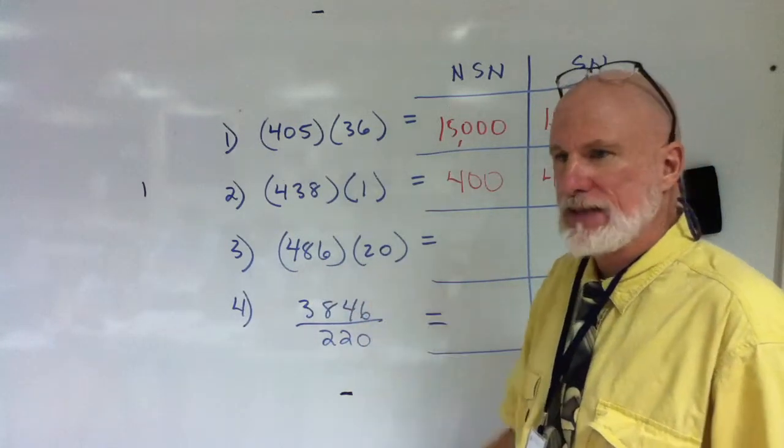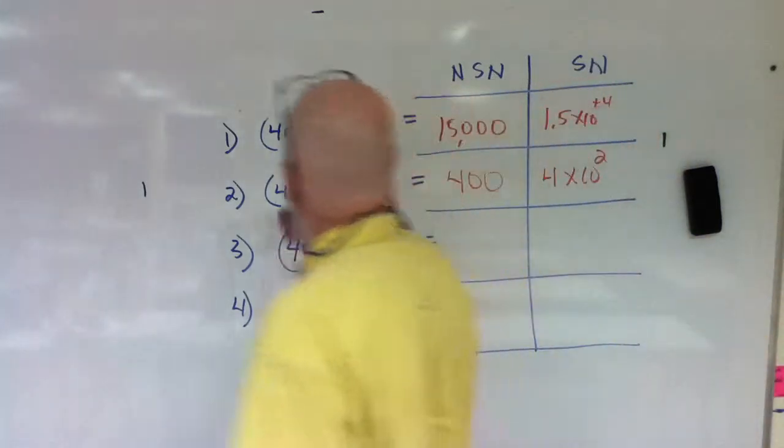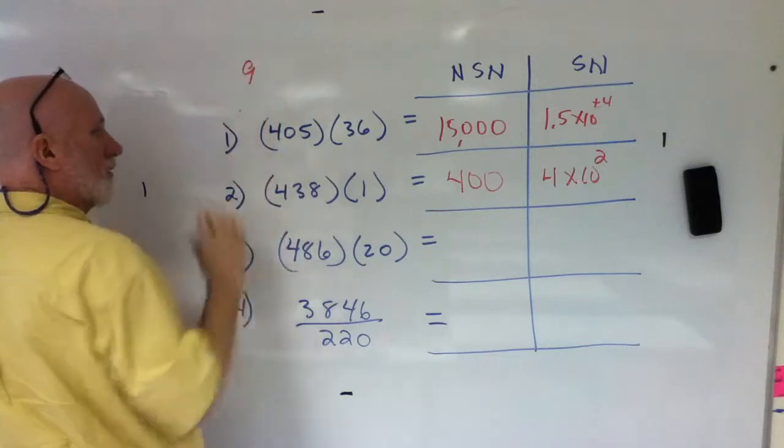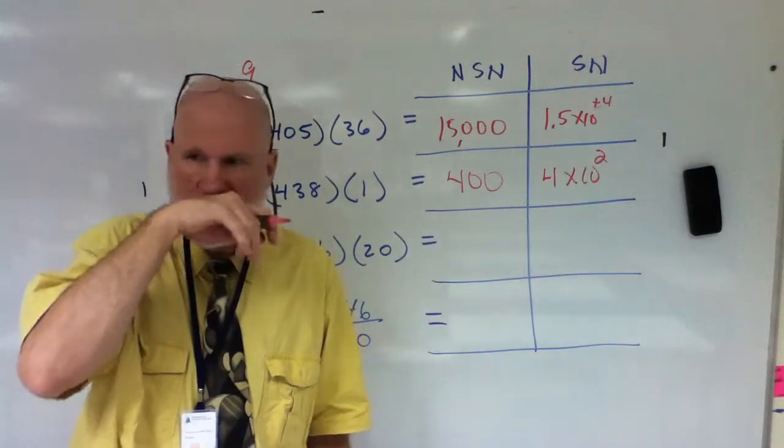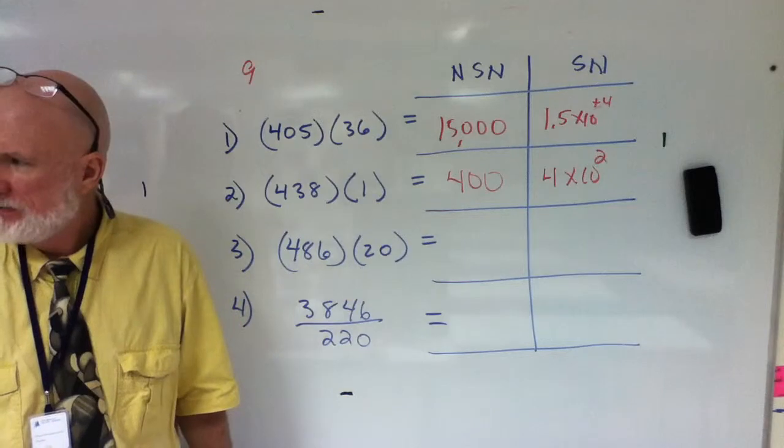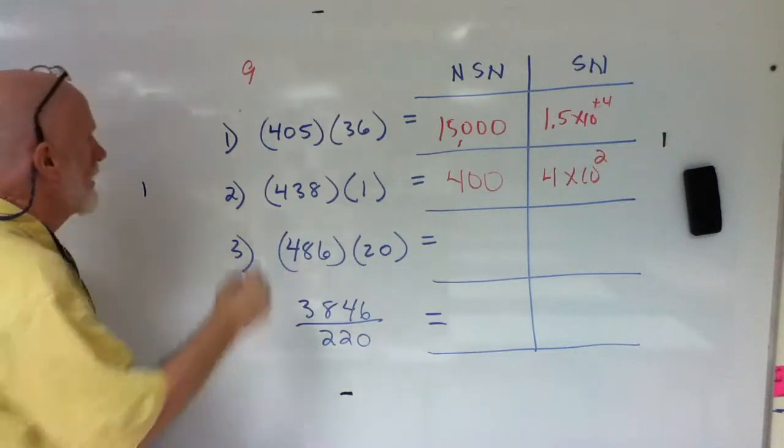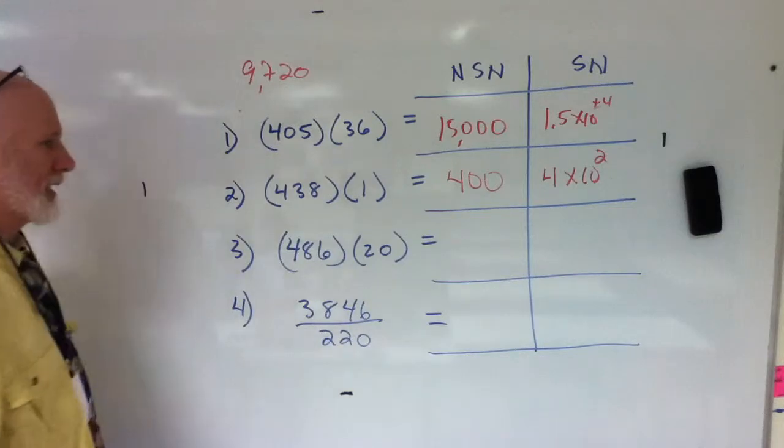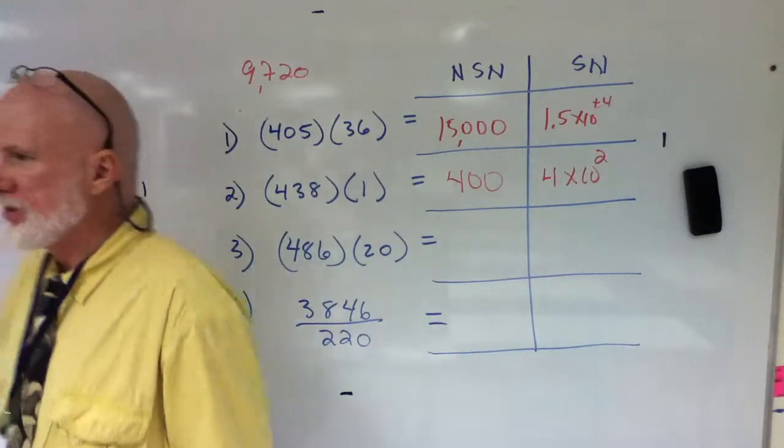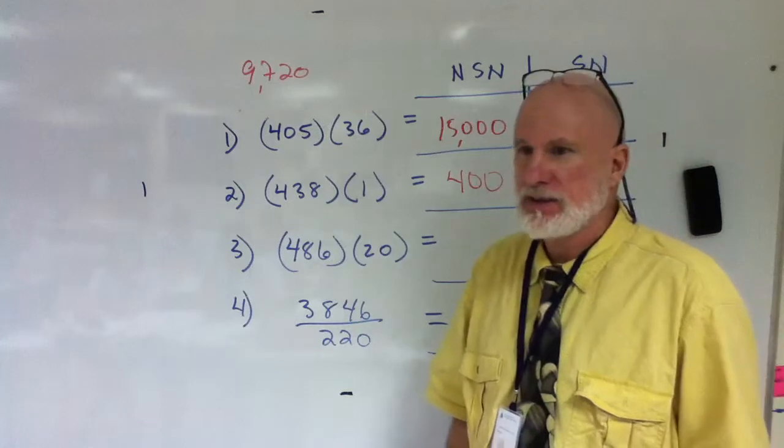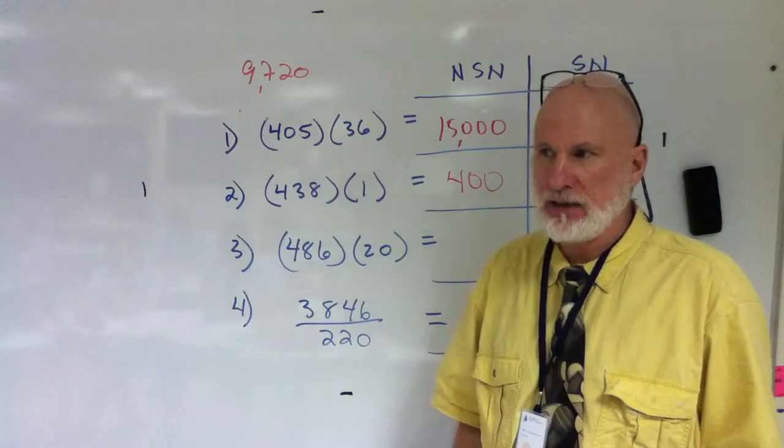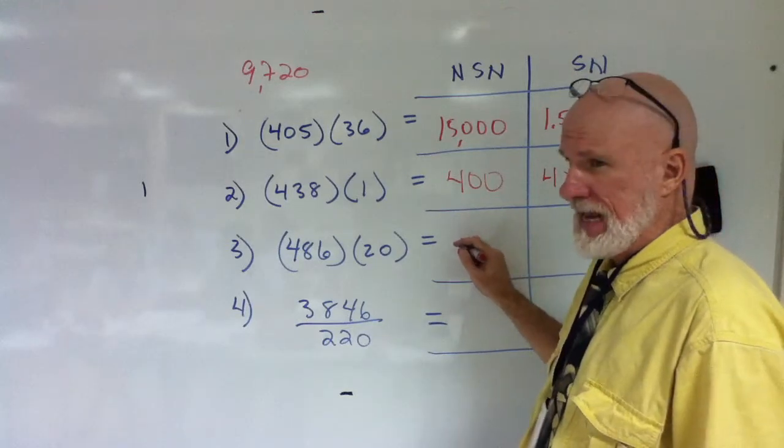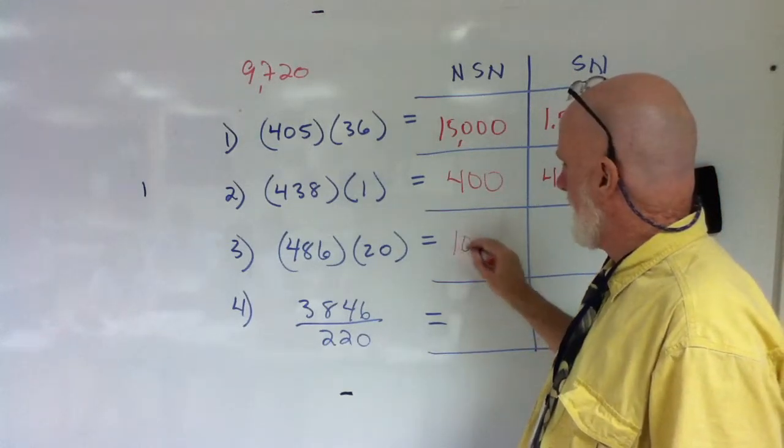486 times 20 is what mathematically? Nine thousand seven hundred and twenty. But I can only have one significant figure, therefore the seven rounds the nine. So that goes to ten, so it'll be ten thousand.